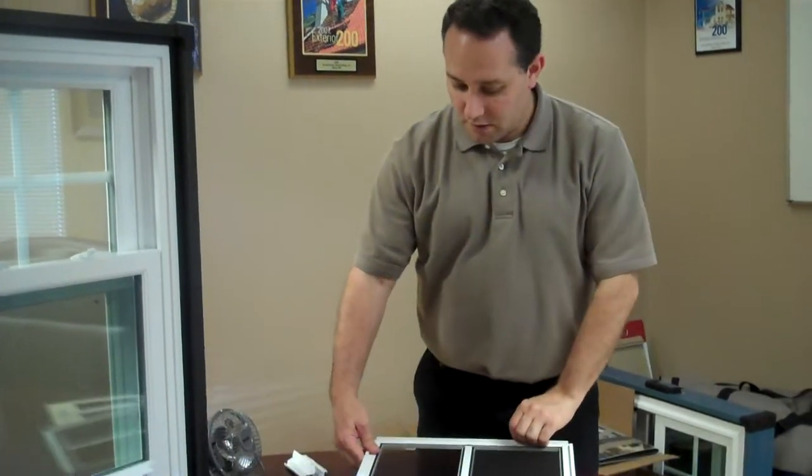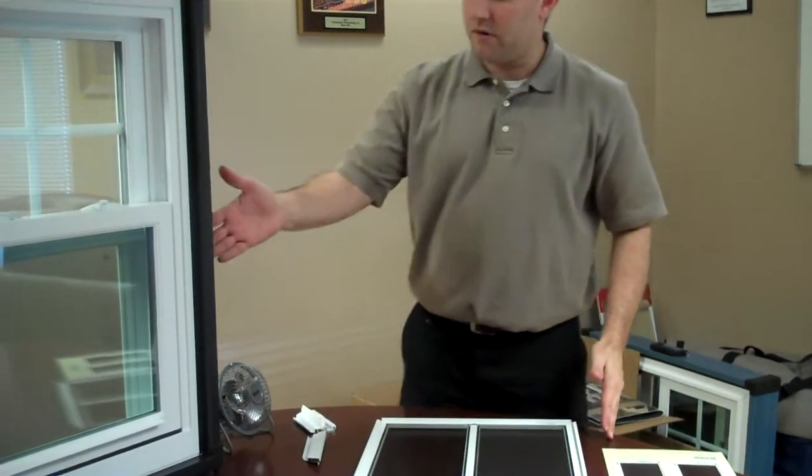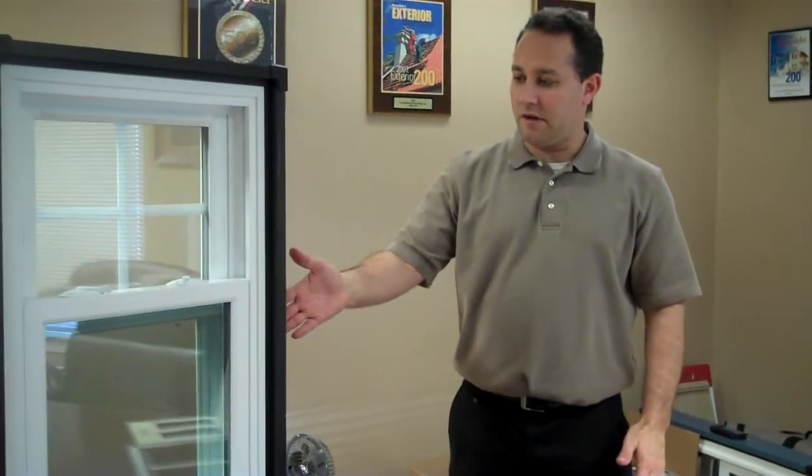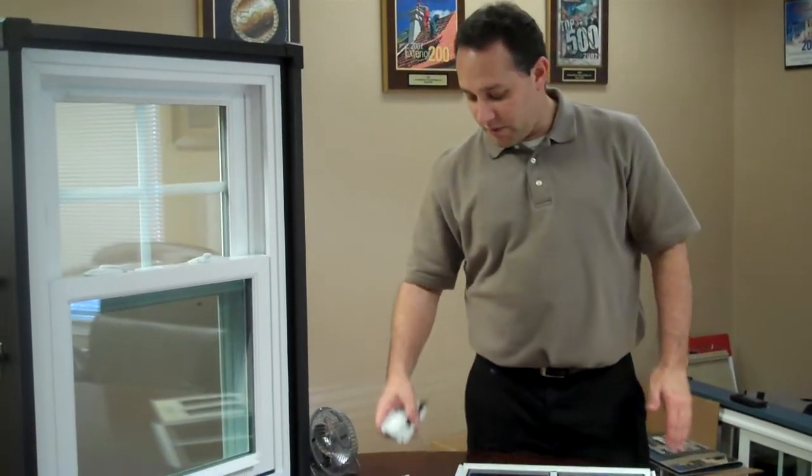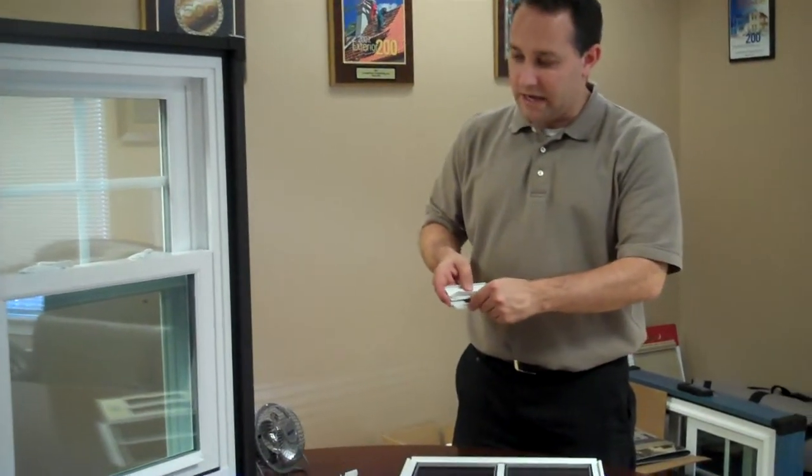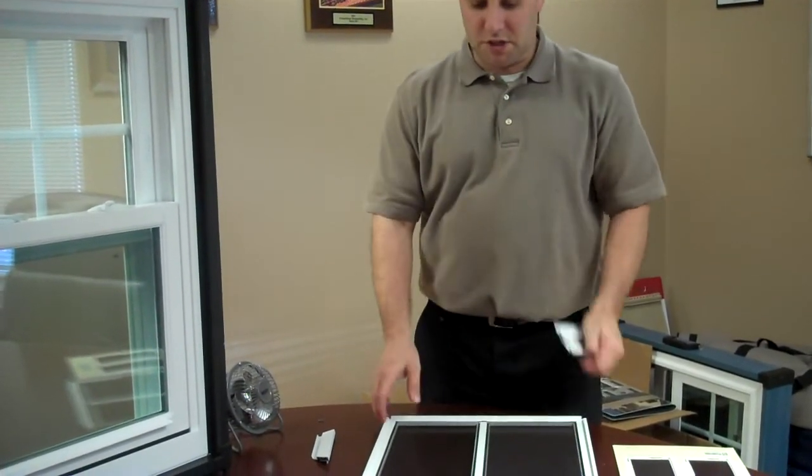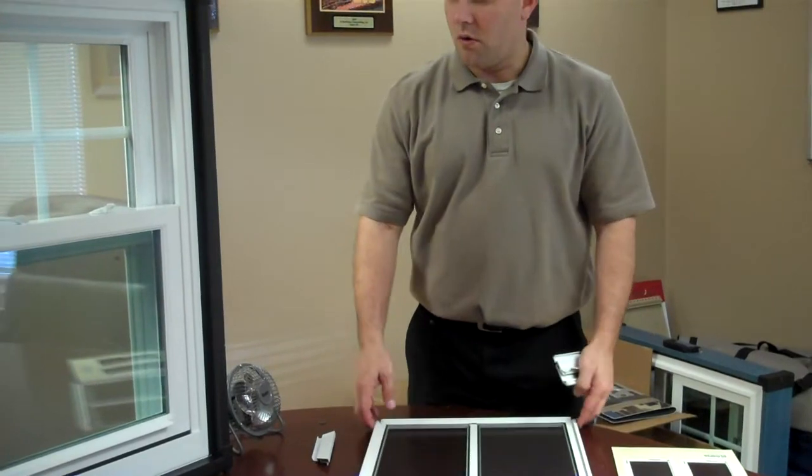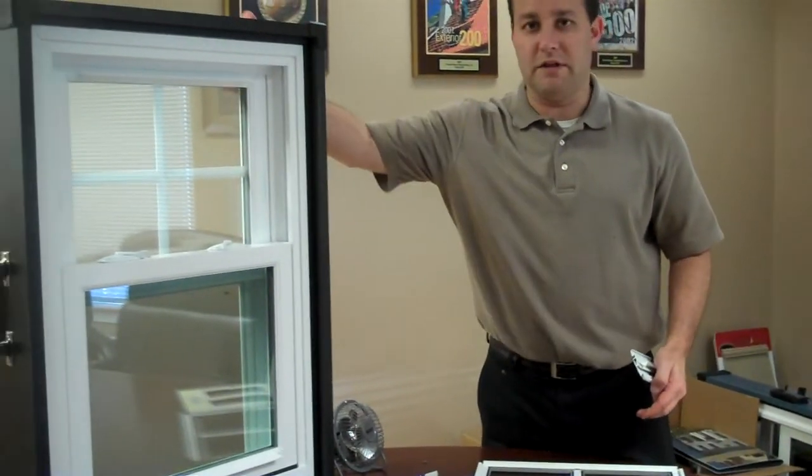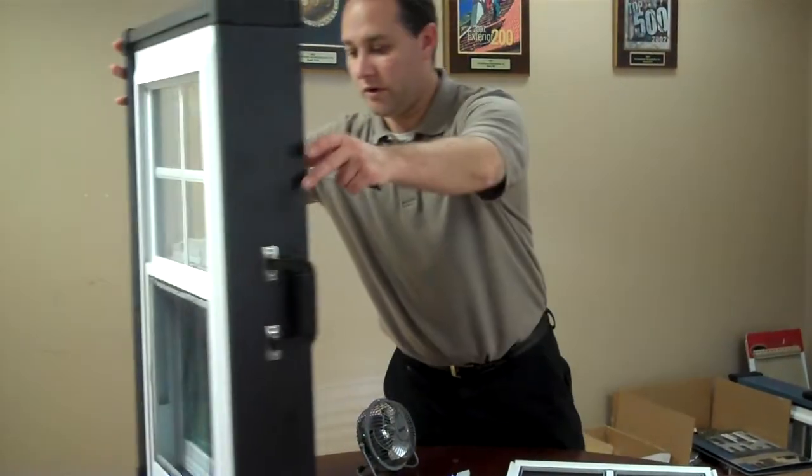Last but not least, all windows in the Heritage series and double-hungs have the ability to also have a locking half screen in addition to a standard half screen or can be done as a full screen on the exterior of the window product.